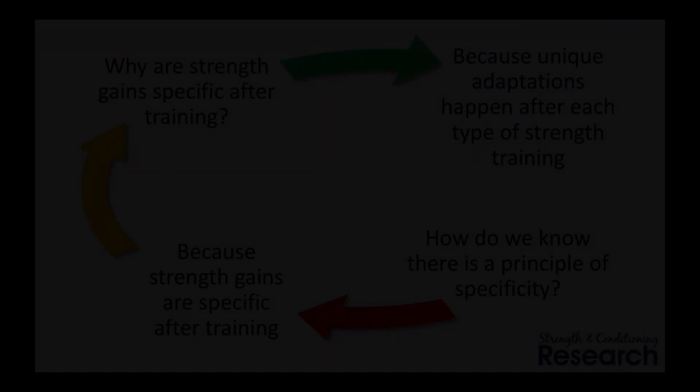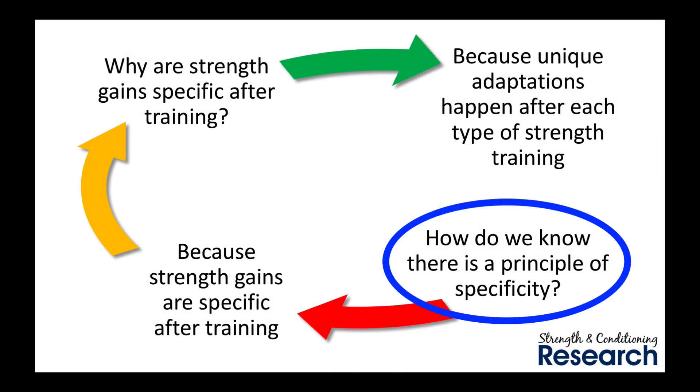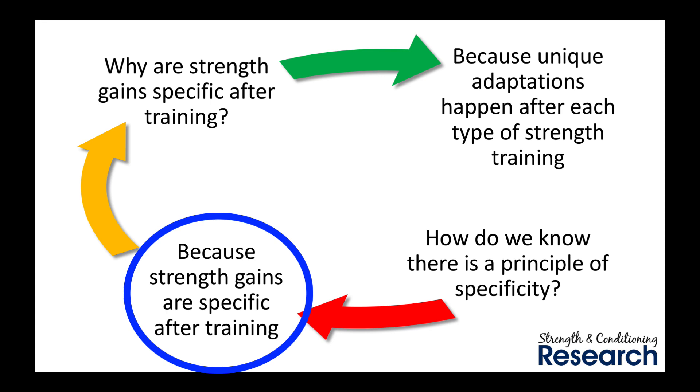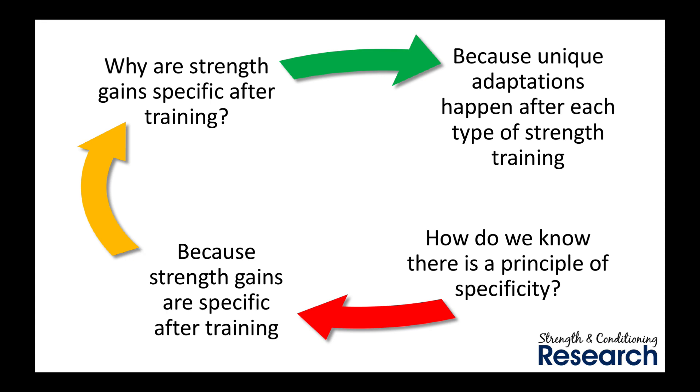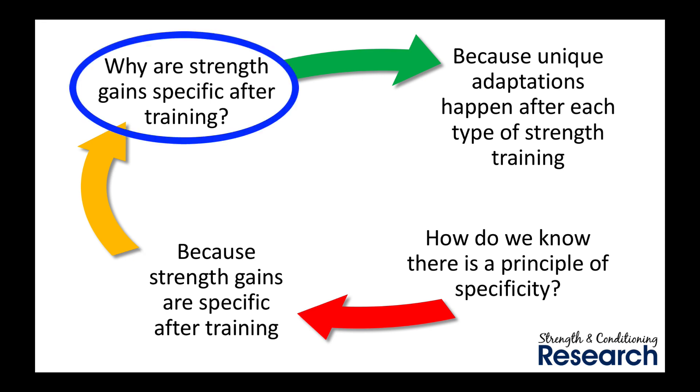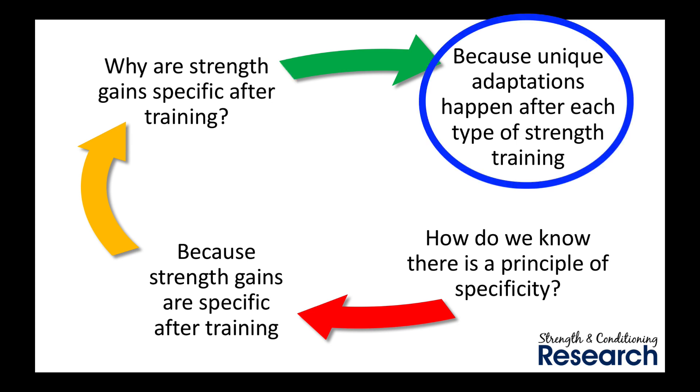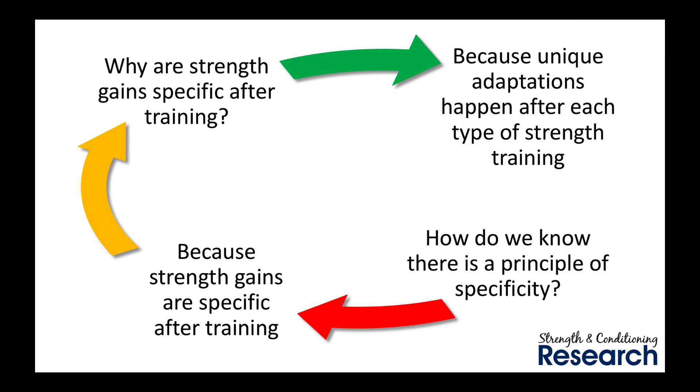What we need to do is stop using the principle of specificity as an explanation and just use it as an observation. So if we correct that, our new diagram looks like this. How do we know there is a principle of specificity? Because strength gains are specific after training — this is our observation. Why are strength gains specific after training? Because unique adaptations happen after each strength training program — and this is our explanation.